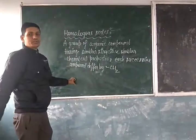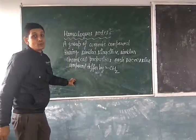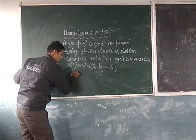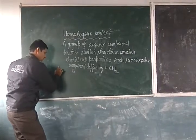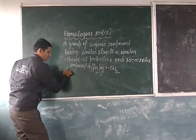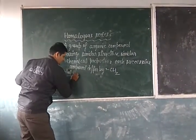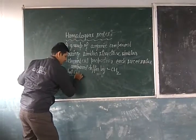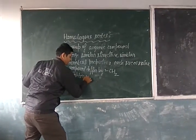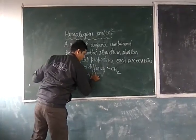For example, the homologous series of alcohols. You know very well the general formula of this homologous series is CnH2n+1OH.